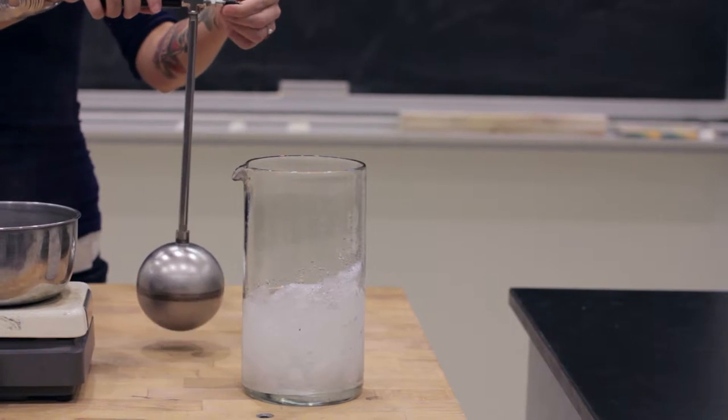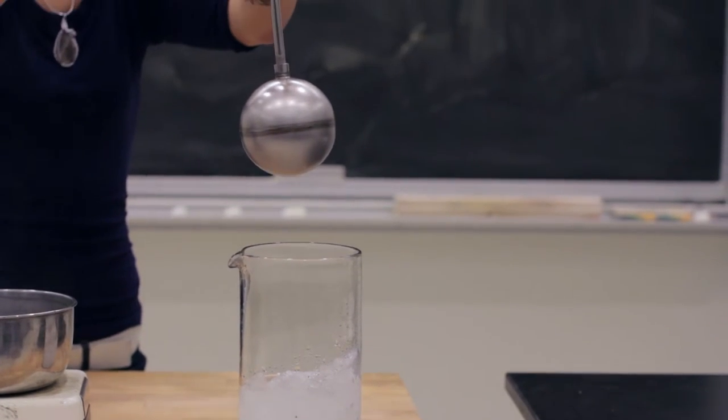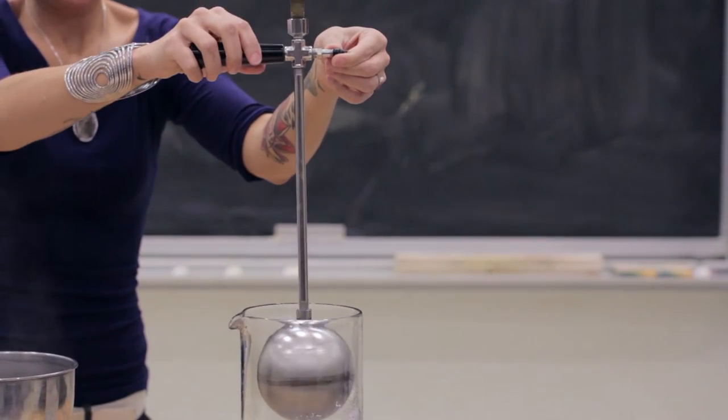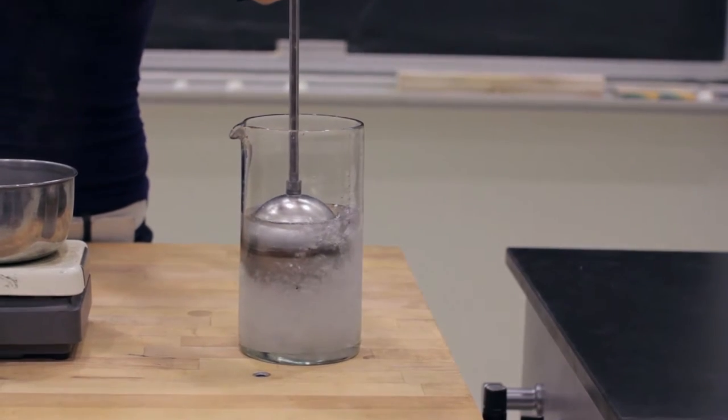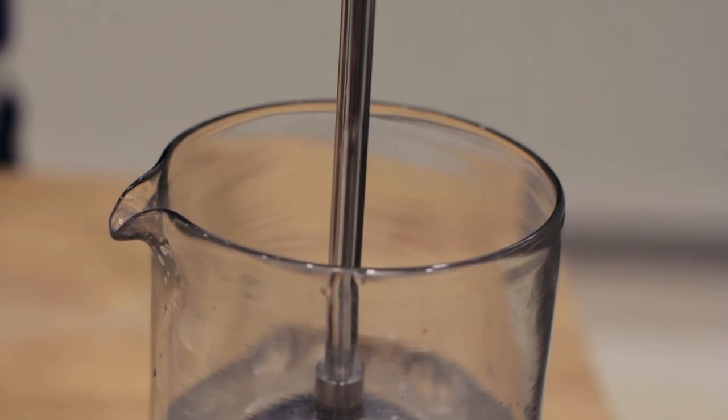We next place the bulb in ice water with a lot of ice. Allow it to reach a temperature near zero degrees Celsius and read off a pressure of 96.5 kilopascals. Note that it is a lower pressure, as expected.